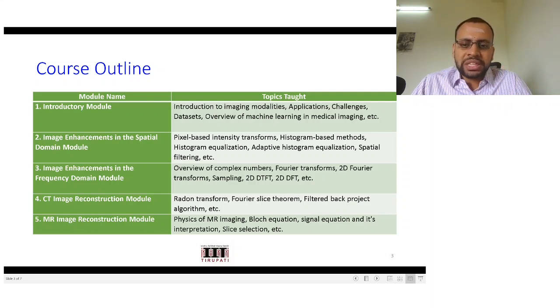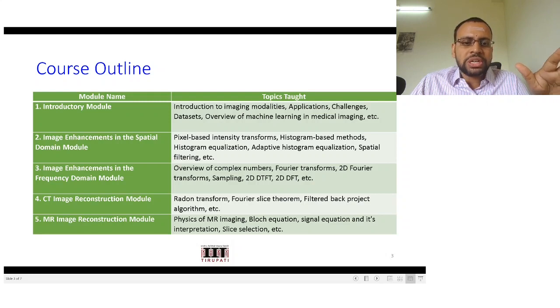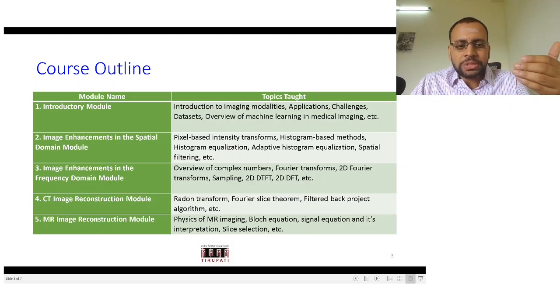After that we would be moving on to image enhancements in the frequency domain. So this is where DSP background would be handy, if not also this is an opportunity as I mentioned to learn them. Here we would start with one lecture giving a brief overview of complex numbers, followed by Fourier transforms, 2D Fourier transforms, sampling, two-dimensional discrete time Fourier transform, two-dimensional discrete Fourier transform. All these things we would be discussing here. This would serve as a basis also, some of these methods and algorithms that we discuss here would be serving as a basis later.